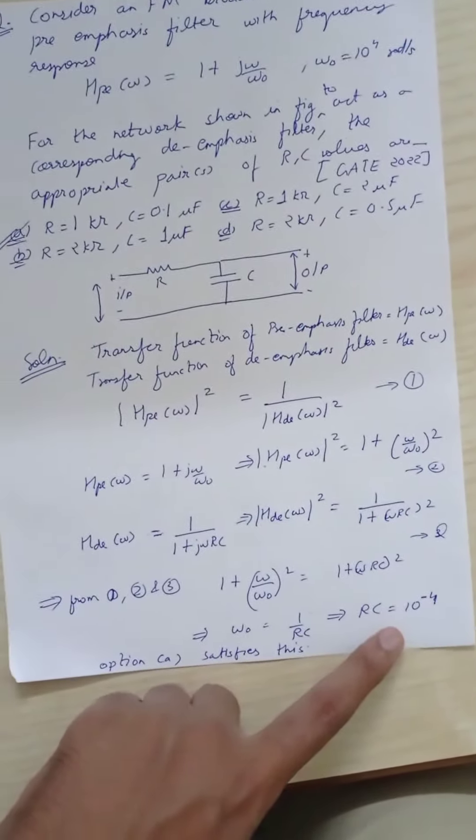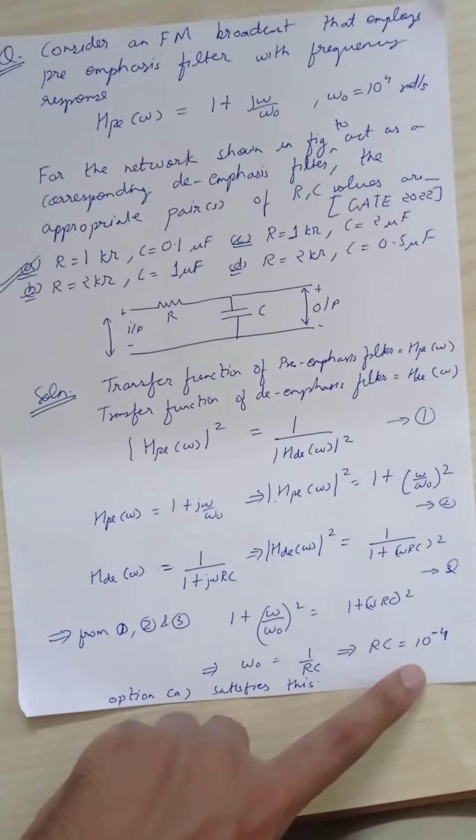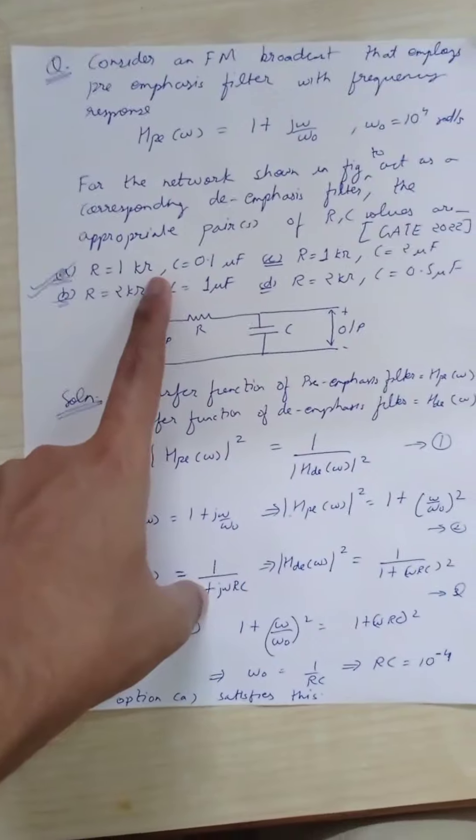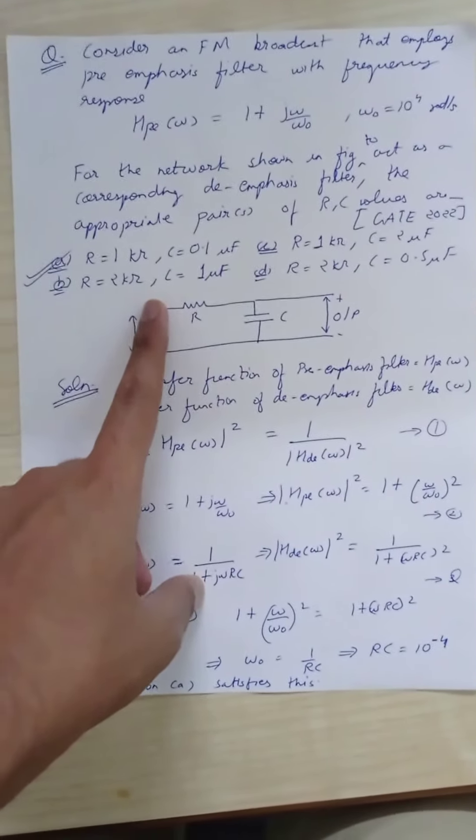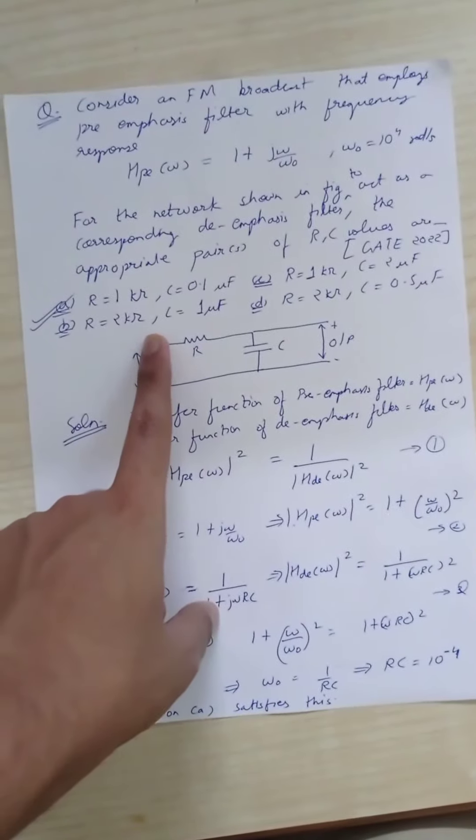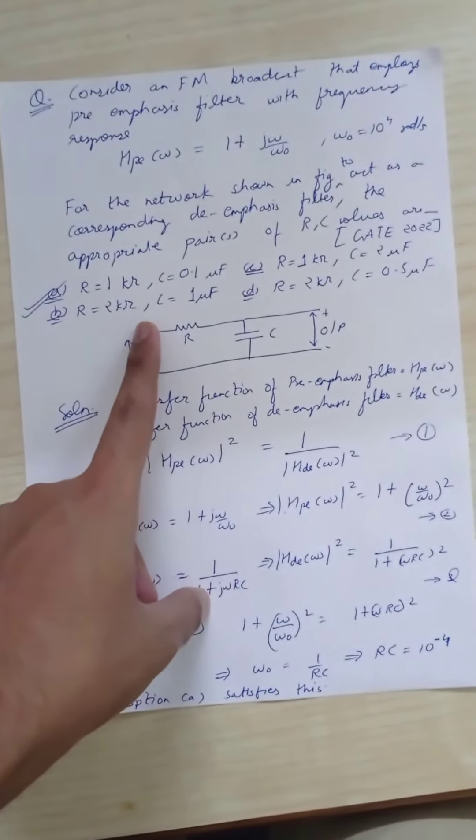So RC should equal 10⁻⁴. Only option A satisfies this, so option A is the correct answer. This is a very easy question from GATE 2022. Thank you.